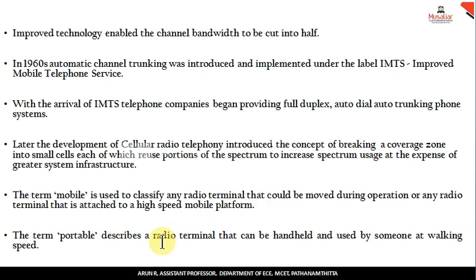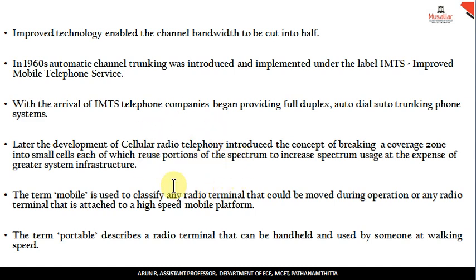With the advance of cellular telephony, many types of cell generations emerged — first generation, second generation, and so on — which will be explained in detail in later videos. Currently we are using 4G or higher. After the invention of IMTS providing full duplex, cellular radio telephony introduced successive generations: first generation, second generation, 2.5G, 3G, and 4G. That is the history and evolution of the mobile radio communication system.